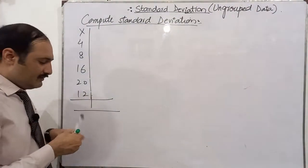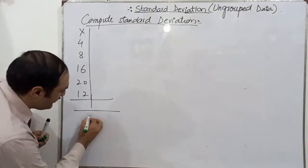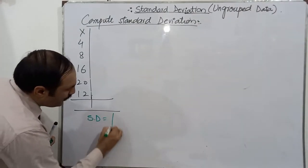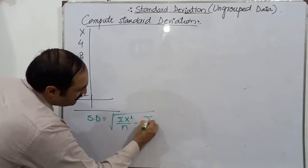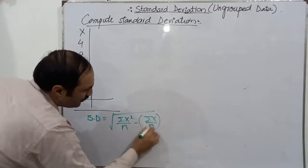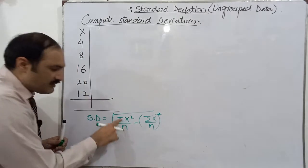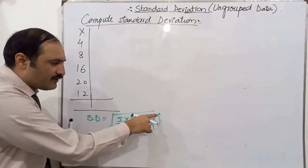What is the formula for standard deviation for ungrouped data? Standard deviation is equal to square root summation x square over n minus summation x over n whole square.